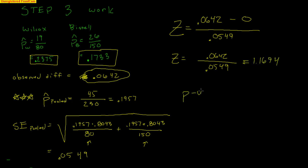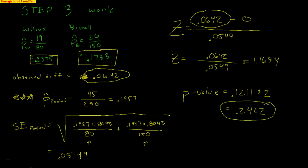To find the p-value: since z = 1.1694 is positive, I find the area above it using normal CDF from 1.1694 to 99, which gives 0.1211. Because our alternative is not-equal-to — we care about a difference in either direction — I double this for both tails: 0.1211 × 2 = 0.2422. That is our p-value, and it's an extremely high p-value.